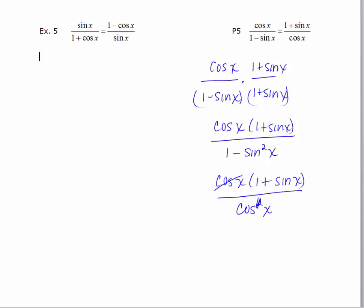We get 1 plus sine x over cosine x. You could have just as easily worked with the right-hand side and multiplied by the conjugate of the numerator, which would be 1 minus sine x over 1 minus sine x, and you would still be able to verify this identity.